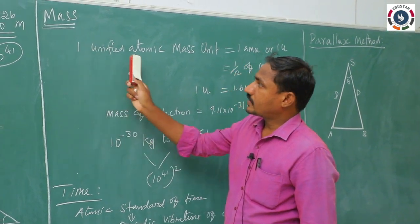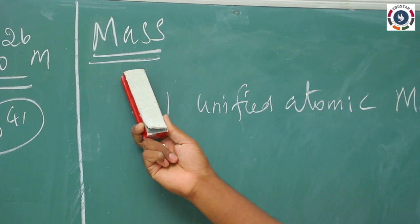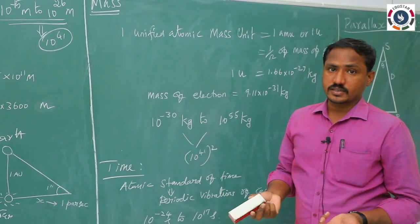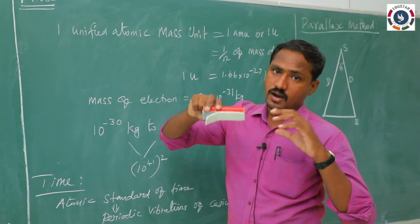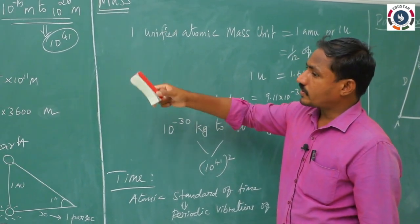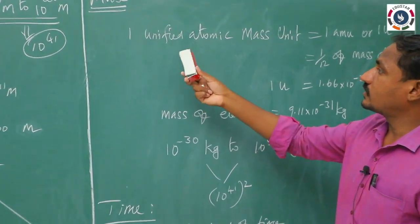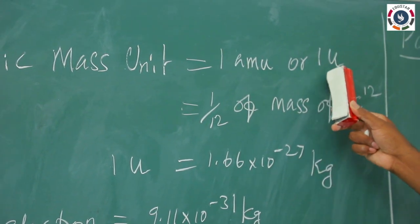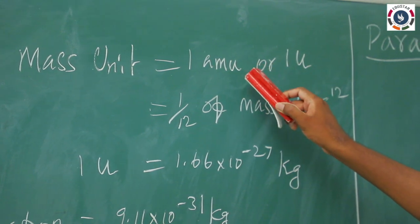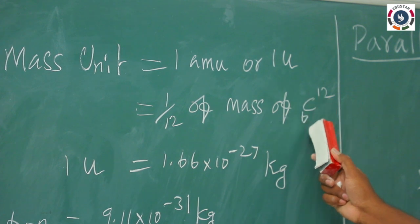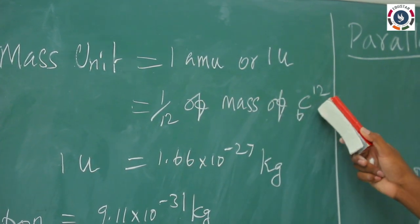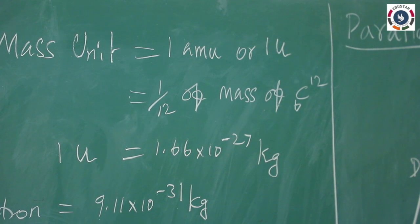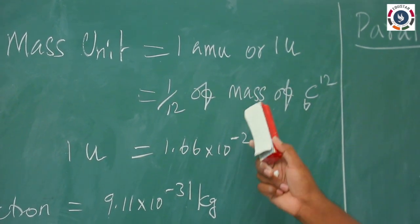Mass is a very important property of matter. All matter has the property of mass. Mass is independent of pressure, location in space, and other physical quantities — it is always the same in all areas. Mass can be measured from lower order to higher order. For atomic scale, we use the unified atomic mass unit, called 1 amu or simply 1 u. It is 1/12th of the mass of the carbon-12 atom (⁶C¹²).